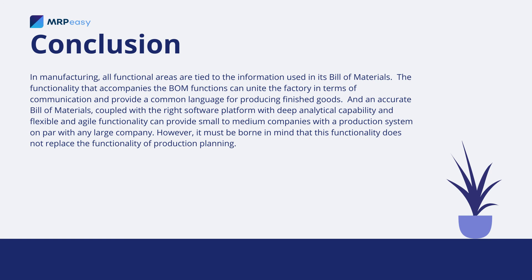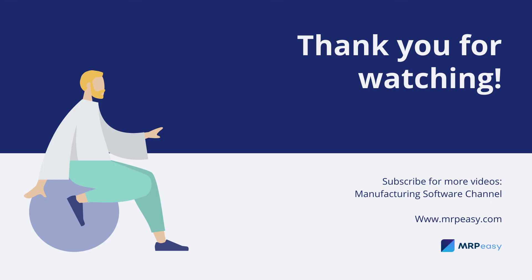The functionality that accompanies bill of materials functions can unite the factory in terms of communication and provide a common language for producing finished goods. An accurate bill of materials coupled with the right software platform with deep analytical capability, technology, and flexible and agile functionality can provide small to medium companies with a production system on par with any large company. However, it must be kept in mind that BOM functionality is not and does not substitute the functionality for production planning and scheduling.